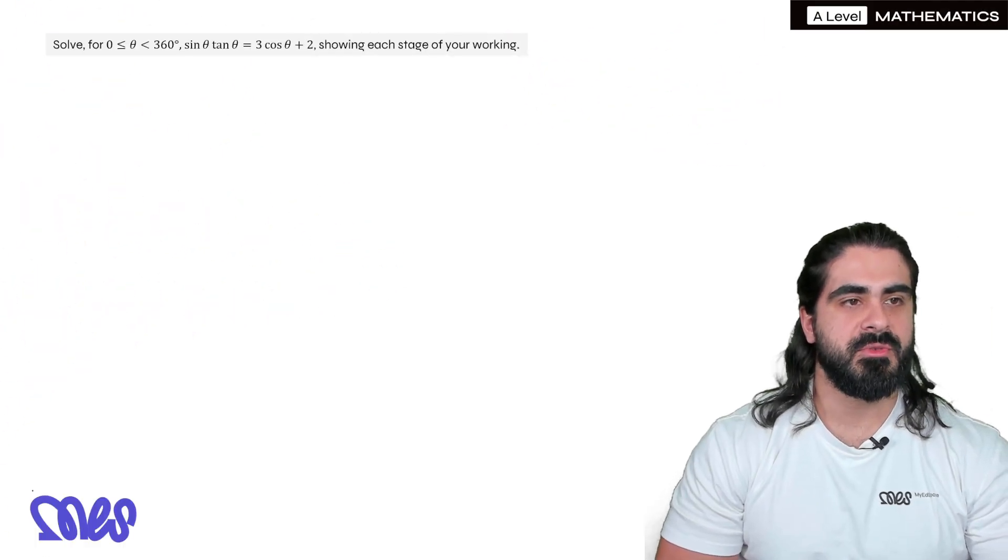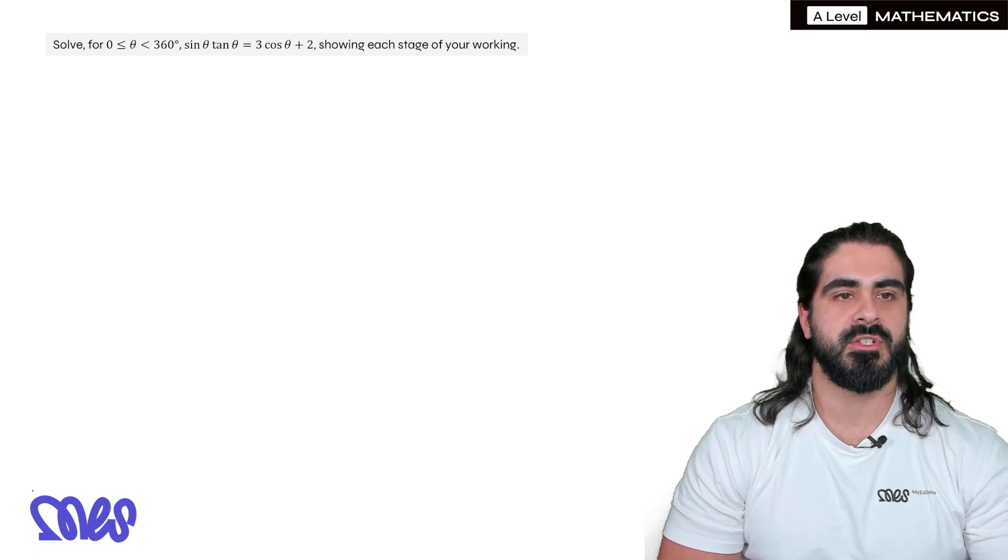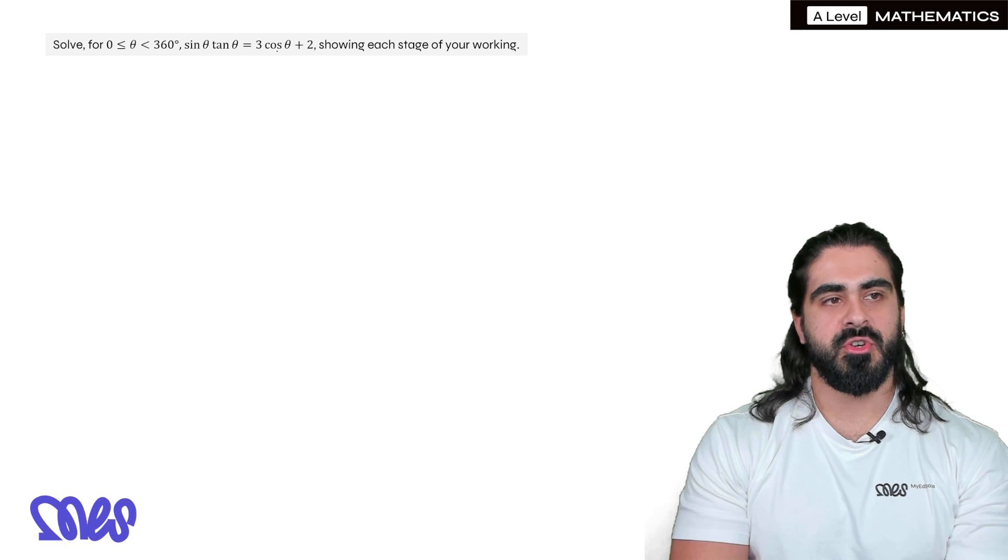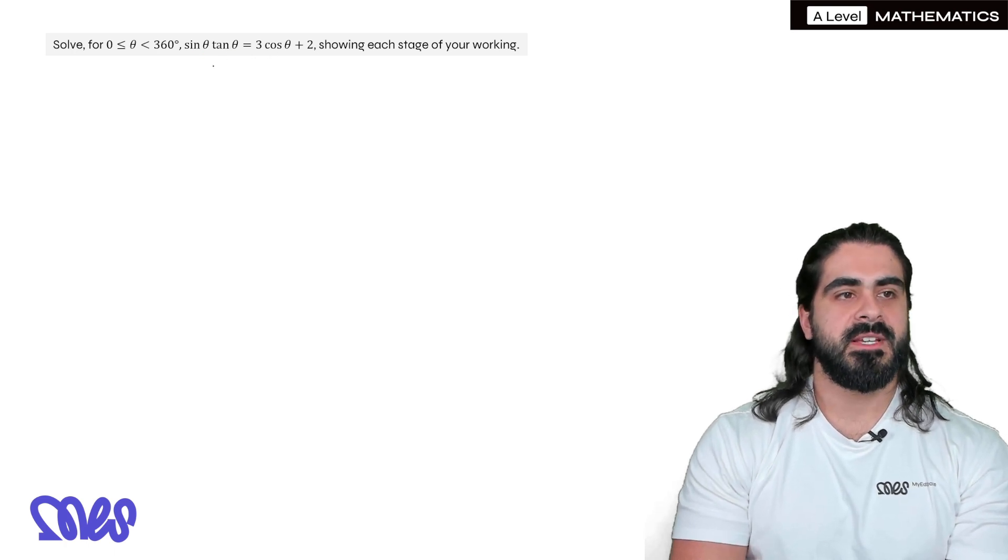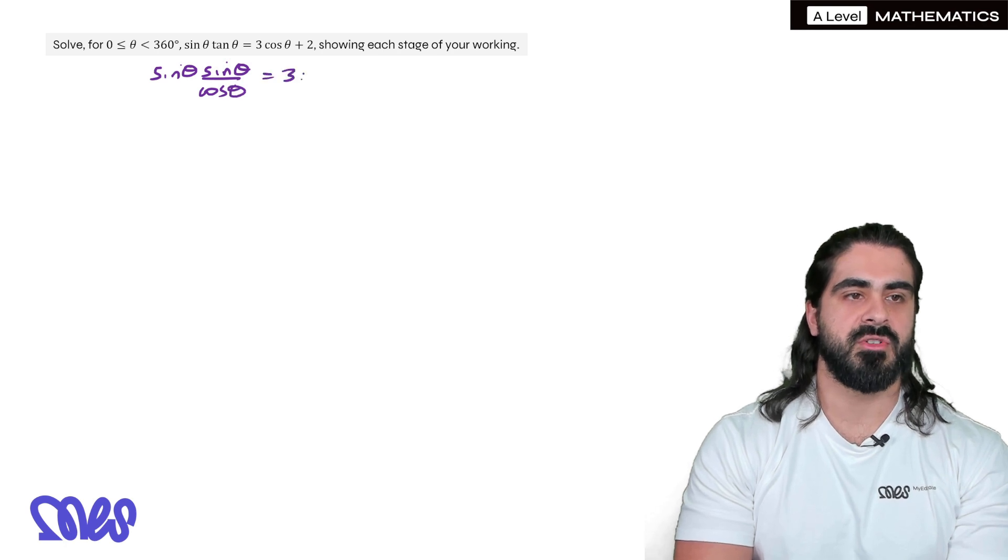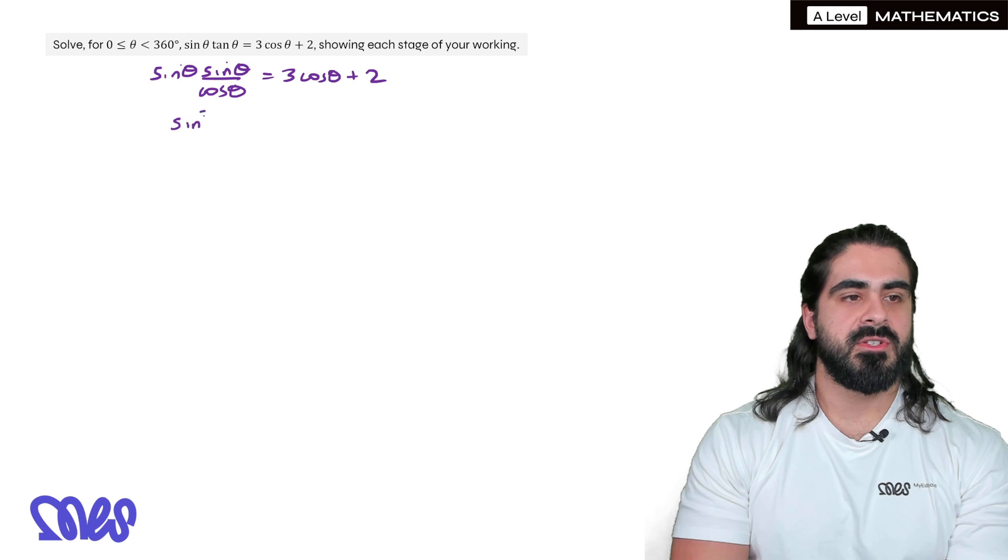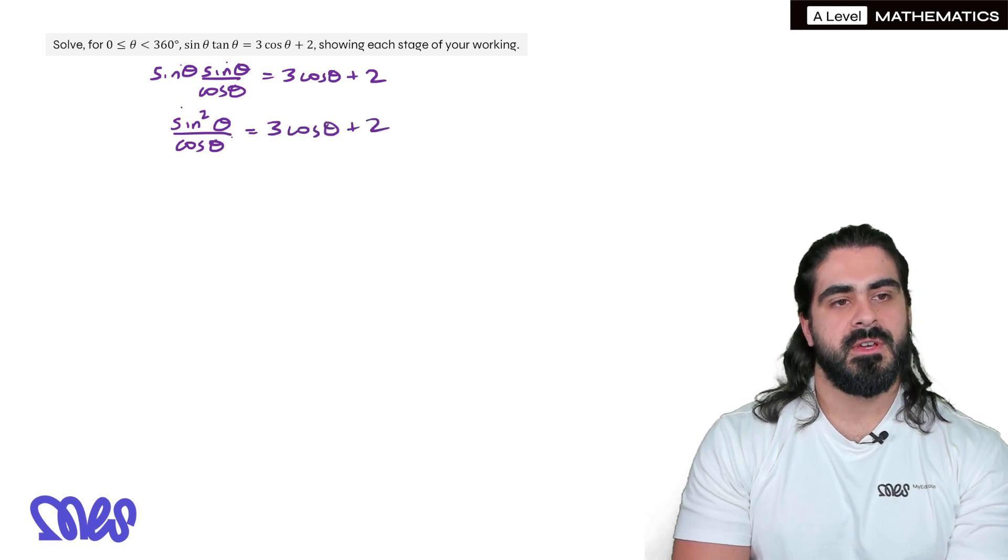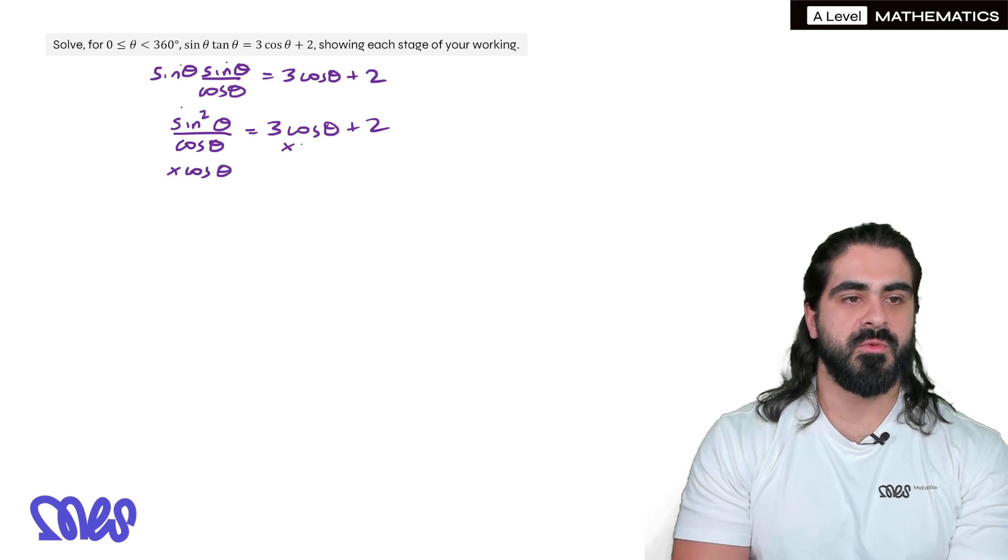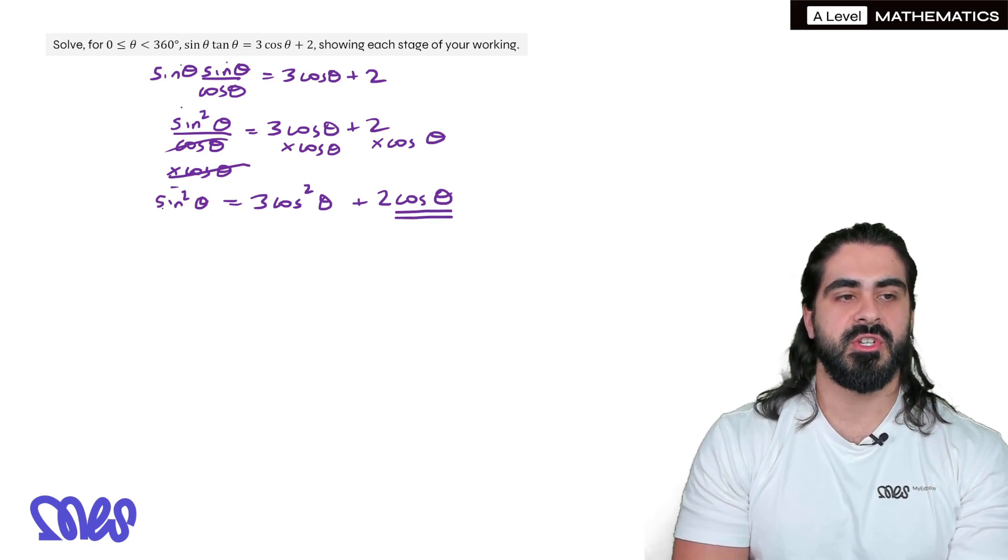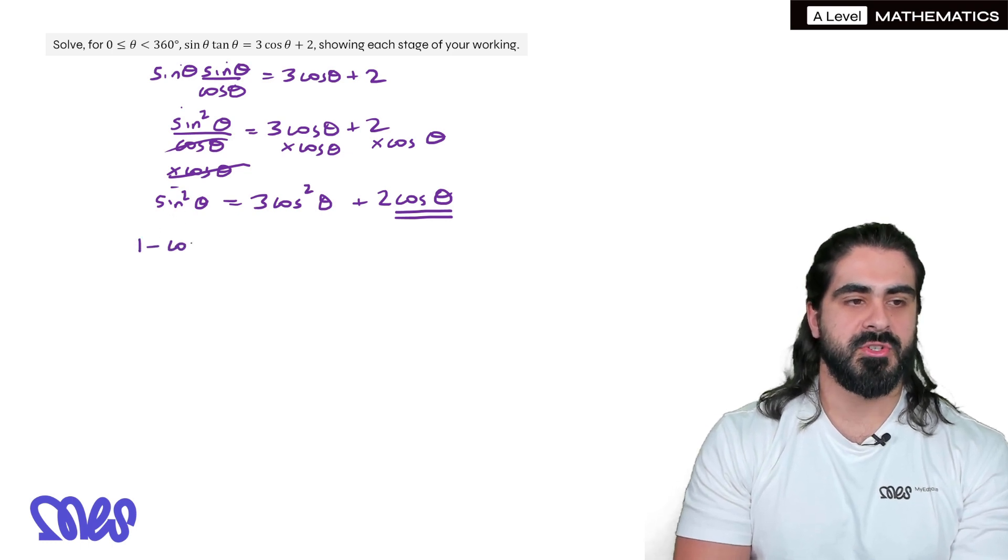Final question. Solve for theta between 0 and 360: sin theta tan theta equals 3 cos theta plus 2. Show each stage of your working. The first thing I notice is that we have tan. Generally speaking, we want to solve with sine and cosine and then make edits if we can. Tan theta, we know, is sine theta over cos theta. So we're going to convert everything into sine and cos. Then we're going to multiply. So we get sine squared theta over cos theta equals 3 cos theta plus 2. Then we're going to multiply everything by cos theta. When we solve, we never like denominators. Now here we have to decide what is the conversion. Well, look at the singular term, cos theta. So we're going to change sine squared this time.